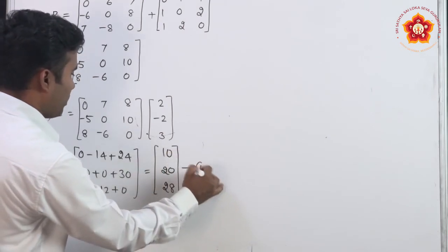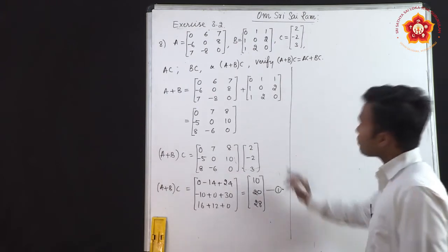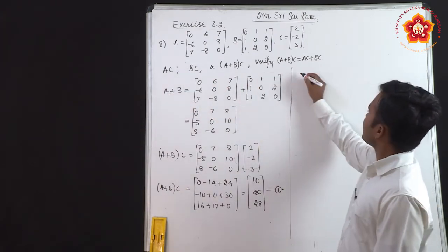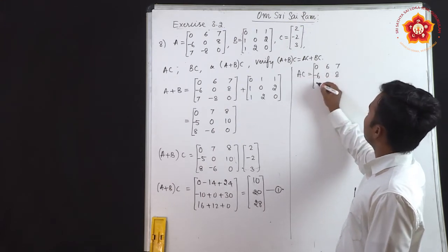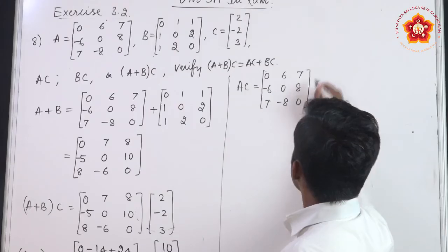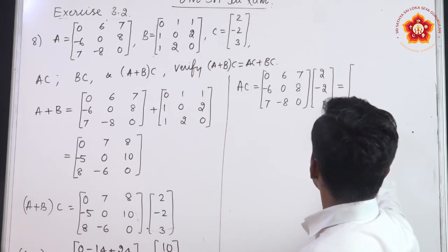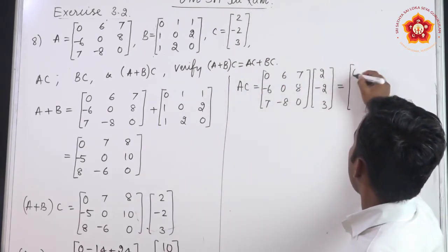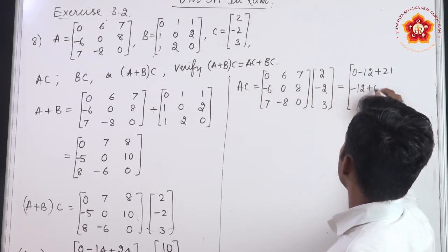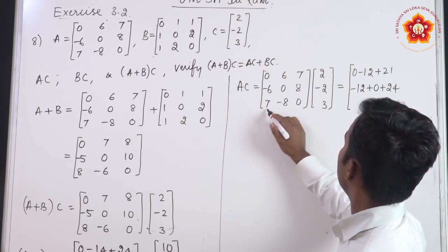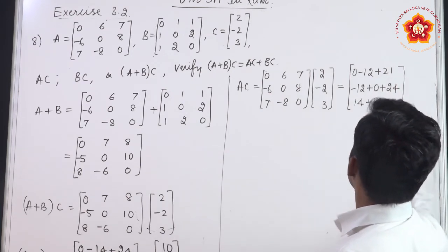Next find AC. A = [0,6,7; -6,0,8; 7,-8,0] × C = [2;-2;3]. First row: 0-12+21 = 9. Second row: -12+0+24 = 12. Third row: 14+16+0 = 30. So AC = [9; 12; 30]. Call this equation 2.